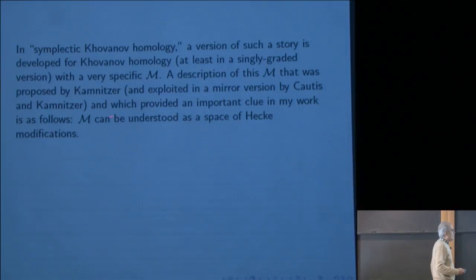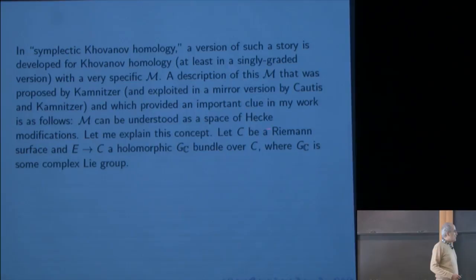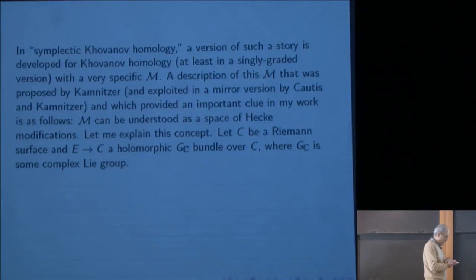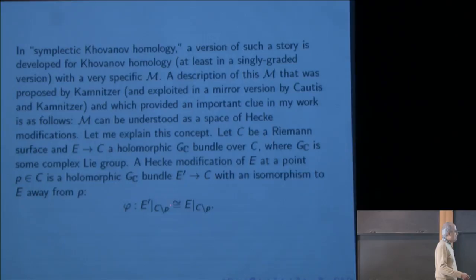Let me explain what a Hecke modification is. We start with a Riemann surface C and pick some compact Lie group G. G_C is the complexification of the gauge group, and E will be a holomorphic G_C bundle over C. A Hecke modification of E at a point P is another holomorphic G_C bundle E prime over C, together with an isomorphism to E away from P. So φ is an isomorphism between E and E prime restricted to the complement of P.